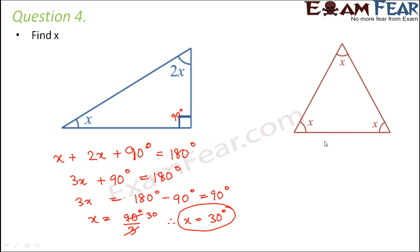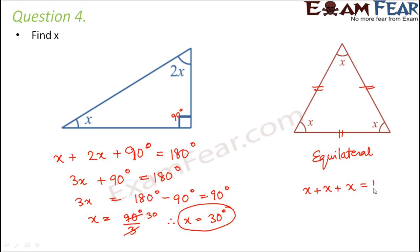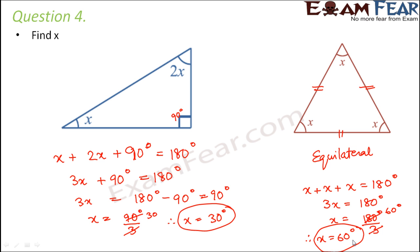Moving on to the next triangle where all the angles are x — this actually means all angles are equal. Can you tell me which type of triangle has all angles equal? Exactly — this is an equilateral triangle. In an equilateral triangle all sides and all angles are equal, but the angle sum property still holds. So 3x is equal to 180 degrees, meaning x is equal to 60 degrees. Therefore each angle of an equilateral triangle is 60 degrees.